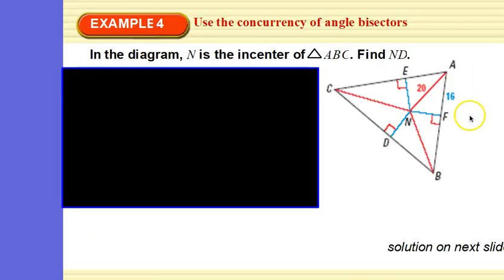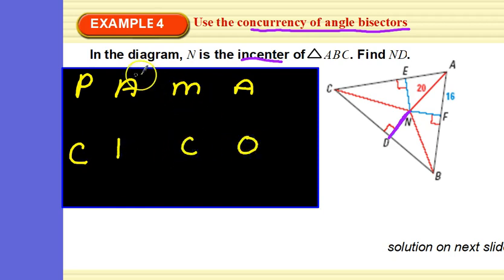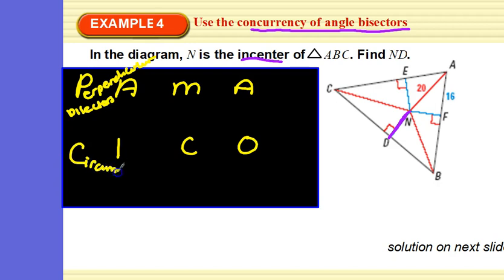In the diagram, N is the in-center of triangle ABC. Find ND. First, what is an in-center? The in-center is the point of concurrency of the angle bisectors. Your perpendicular bisectors meet at the circumcenter, and your angle bisectors meet at the in-center.